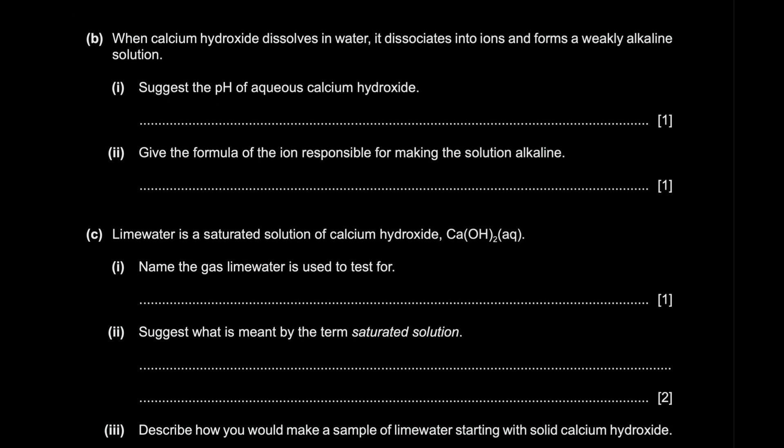When calcium hydroxide dissolves in water, it dissociates into ions and forms a weakly alkaline solution. So just the pH of the solution. So it's weak, so I go with 9. But the marking scheme will tell you the range anything from 7 to 12 works. So yeah, they're very generous this time around.